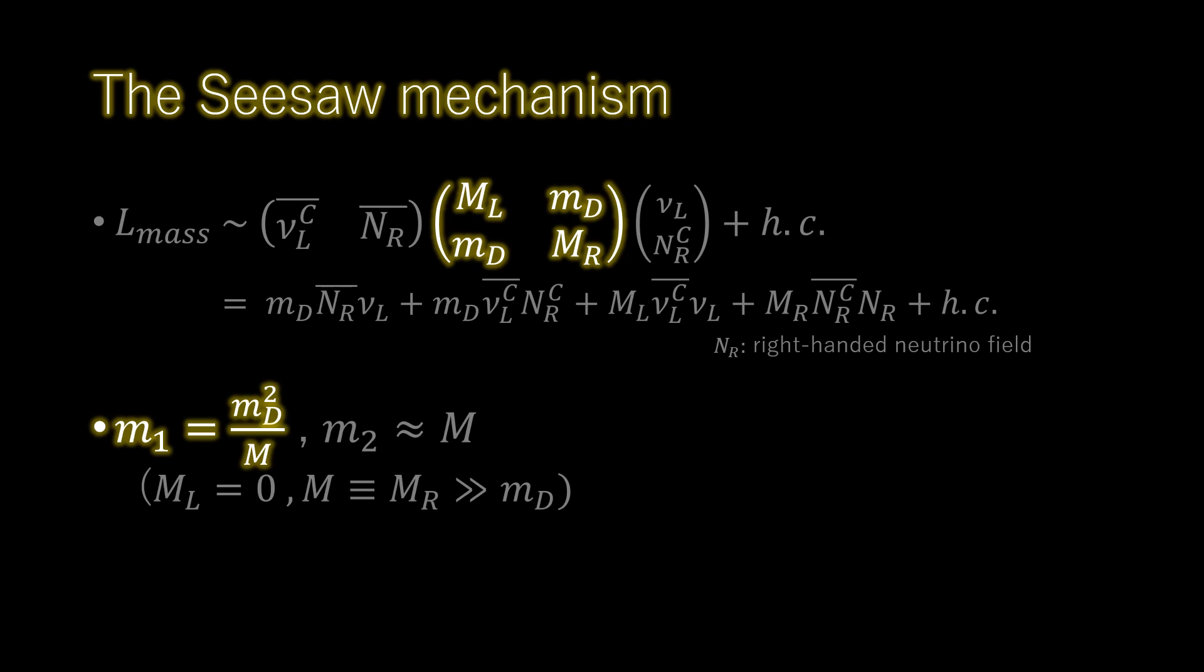Thus, the addition of a right-handed neutrino allows the neutrinos to gain a mass in the same way as all other fermions in the standard model. Although we do not yet know the absolute masses of the neutrinos, we do know they are very small. If they do acquire their mass in the same way as all the other fermions, why should they be so much lighter?